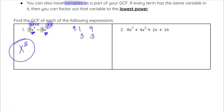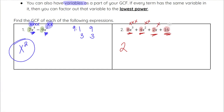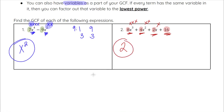On number two, we have 8x³ + 4x² + 2x + 16. Looking at the four numbers — 8, 4, 2, and 16 — they are all even, so we can at least divide by 2. And because one of them is 2, we can't divide by anything more than that, so 2 is part of our GCF. Checking for variables: x³, x², x, and then a constant — this last term has no x, so I cannot include x in the GCF. So 2 is our GCF here.